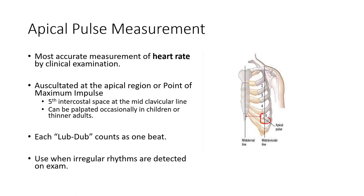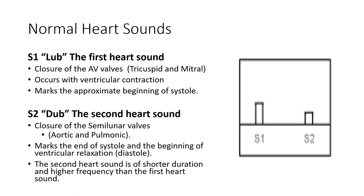Apical pulse measurement is the most accurate way of getting heart rate because you're listening directly to the heart, outside of having an ECG or looking at an echocardiogram, which is visualizing the heart beating.